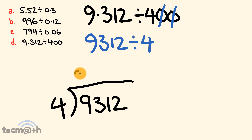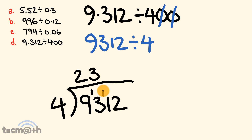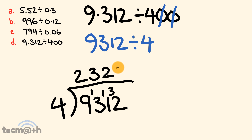So 9312 divided by 4: how many times does 4 go into 9? It goes in 2 times with 1 left over. How many times does 4 go into 13? It goes in 3 times — 3 fours are 12 — with 1 left over. How many times does 4 go into 11? 2 times, because 2 times 4 is 8, leaving 3 left over. Finally, how many times does 4 go into 32? It goes in 8 times exactly. So our interim answer is 2328.